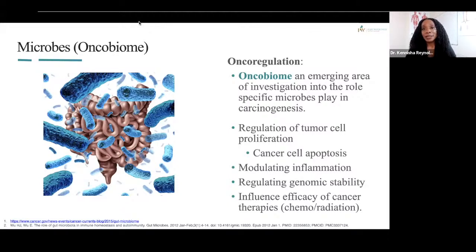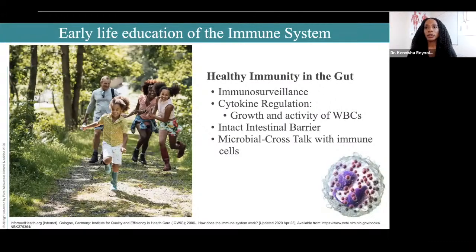The type of bacteria you have in your gut can influence the efficacy of cancer treatment. Studies looking at cisplatin have found that tumor sensitivity to therapies can be enhanced by having a healthy microbiome. The development of the immune system starts early in life. Gut bacteria facilitates its development, helps with immunosurveillance, cytokine regulation, maintaining proper white blood cell activity, and maintaining an intact intestinal barrier. 80% of our immune system is inside the gastrointestinal tract.